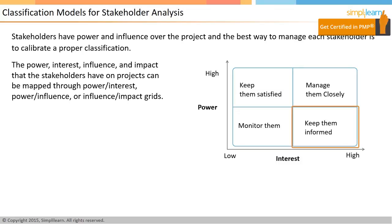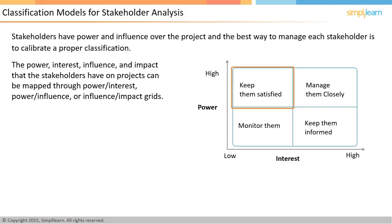The stakeholders in the bottom-right quadrant, with high interest but low power, need to be kept in the loop — share information with them and keep them regularly informed. The stakeholders in the top-left quadrant, with high power but low interest, can be managed by keeping them happy, for example by making sure their interests and opinions are taken into consideration. The stakeholders in the bottom-left quadrant, with low power and low interest, may be managed less actively by simply monitoring how things are going with them.